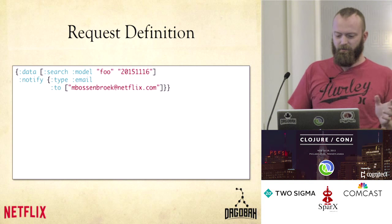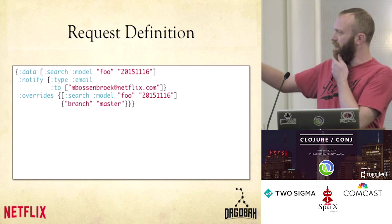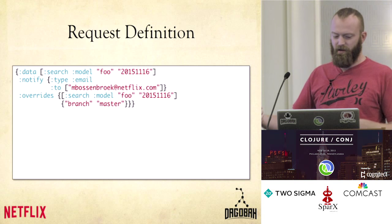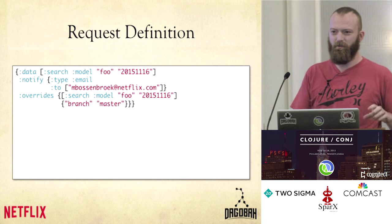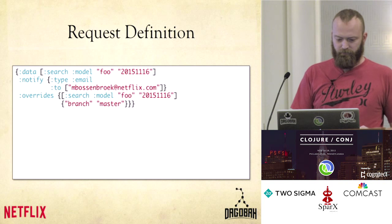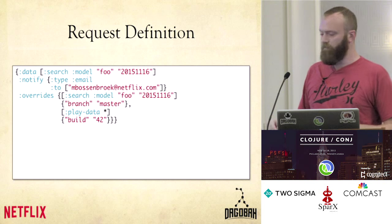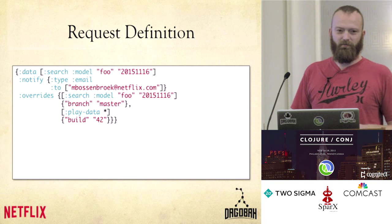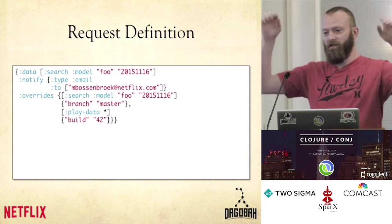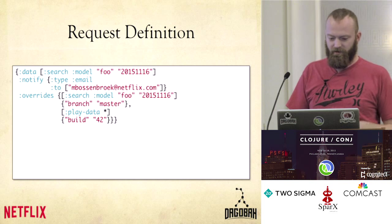I can also tell it different things about how I want this to be built. I can say I want the code to come from the branch master — I don't want somebody's feature branch getting in my way. I can also say for all of the play data that we use, use build 42 exactly. So you can specify different things about the ancestor data as well that you know will come into play when building this data.